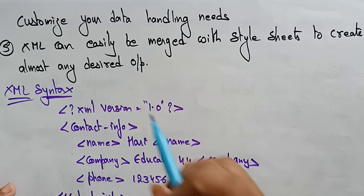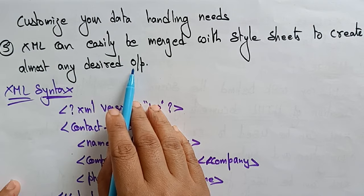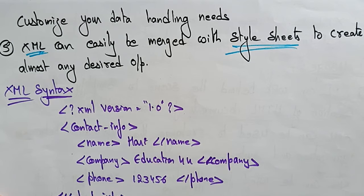XML can easily be merged with style sheets to create almost any desired output. You can merge XML with cascading style sheets, which are going to create almost any desired output.